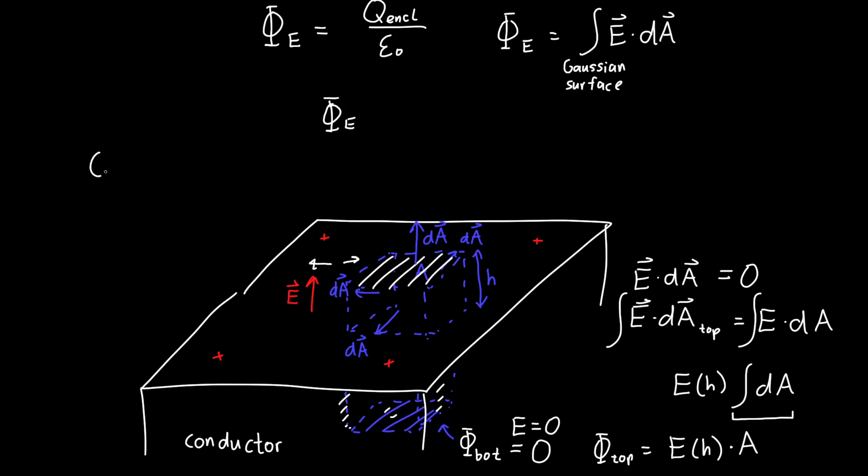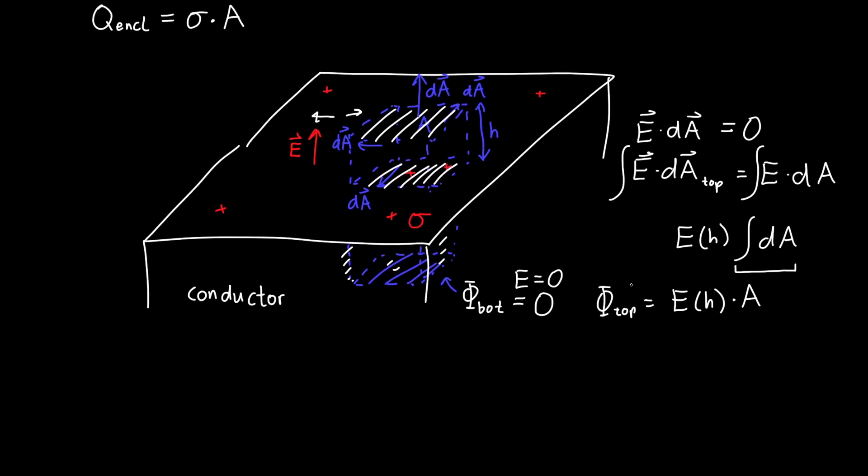Now to apply Gauss's law, all we have to figure out, all we have left to figure out is the enclosed charge. And because we've got a surface charge density, so we said we had some surface charge density sigma, all we care about is the area that our cube, our little cube is enclosing. And so the total charge enclosed is just our surface charge density times our area. And because the area on the top of this Gaussian surface is the same as the area that we're encapsulating the charge of, I'm just going to call both of them A. And so now we have the charge enclosed, and we have the flux, the total flux, which is just the top flux. We can set them equal to each other, or the flux is equal to the charge enclosed over epsilon naught. And we have E as a function of H times our area is equal to sigma times our area divided by epsilon naught.